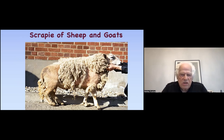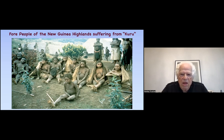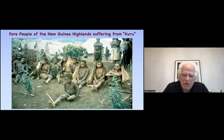This is scrapie of sheep — the name comes from the animals scraping their fur off — and this is an advanced case of scrapie. Here are people dying of kuru in Papua New Guinea in the 1950s, all ages but predominantly women, and here a young boy. The cause was ritualistic cannibalism: when people died, their brains were taken, cooked, and eaten, but the cooking didn't kill all of the prions, which are resistant to heat inactivation.